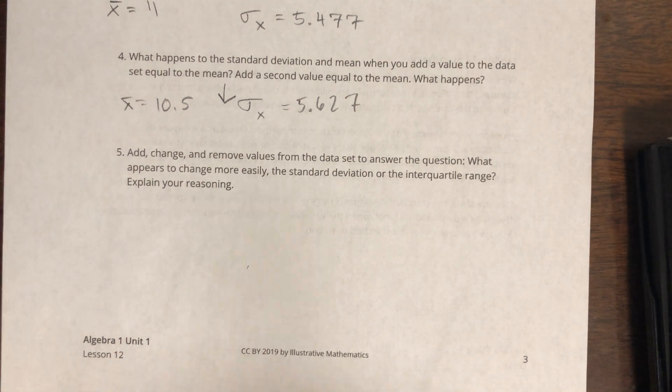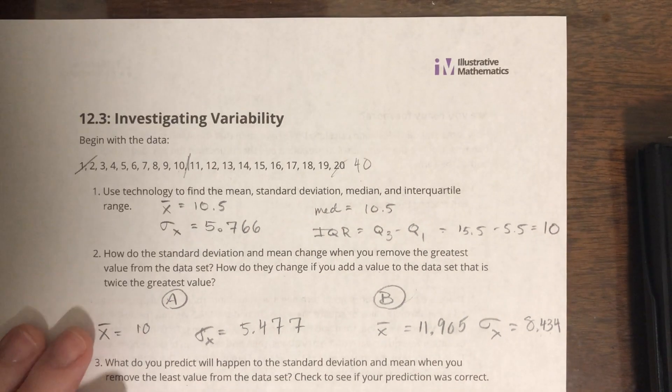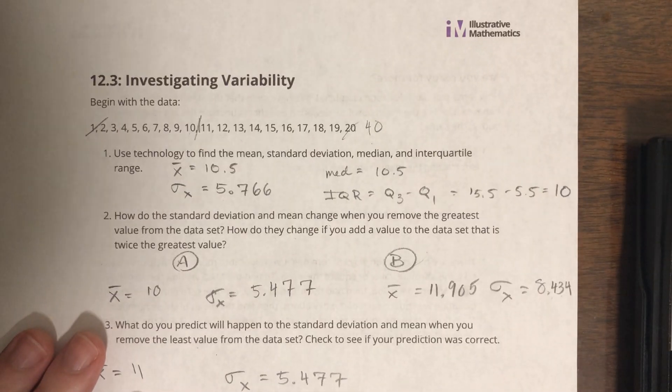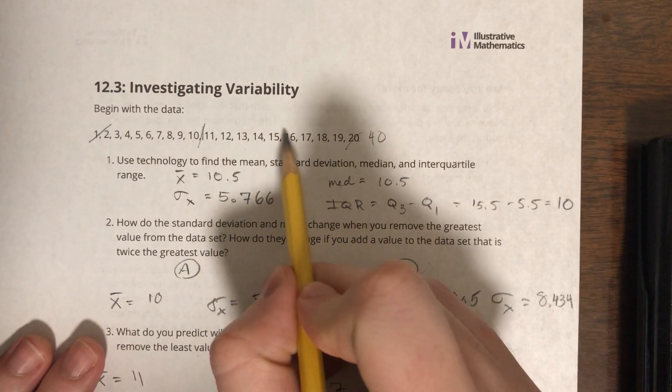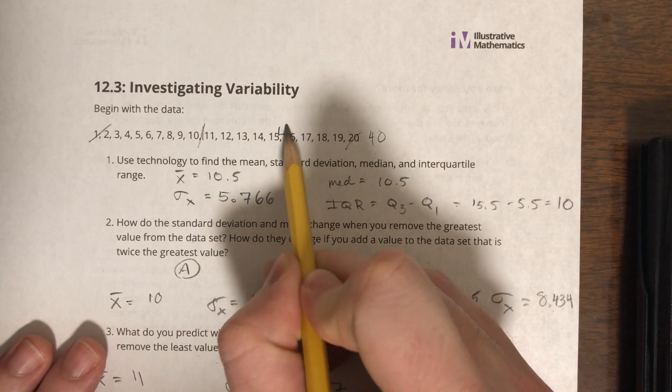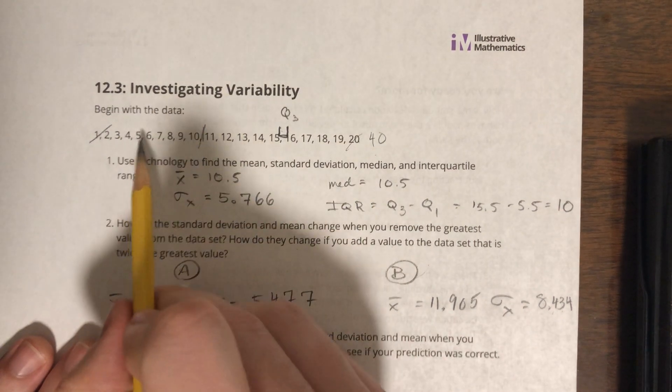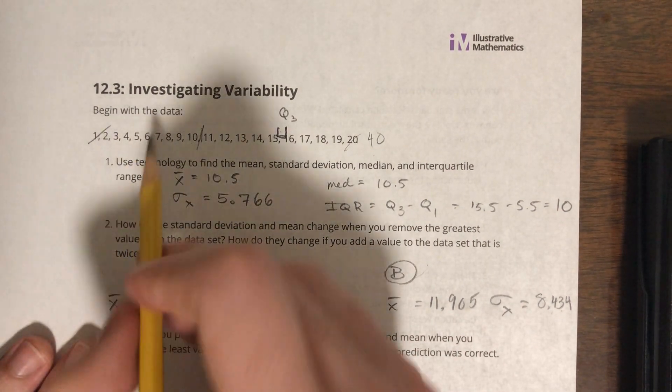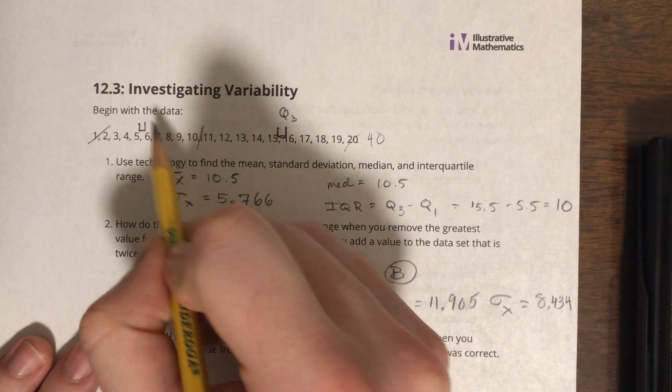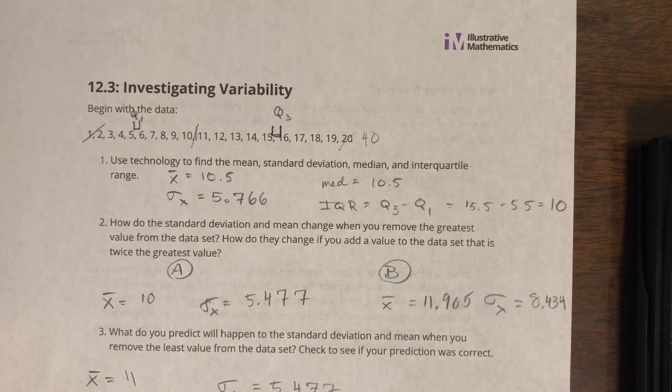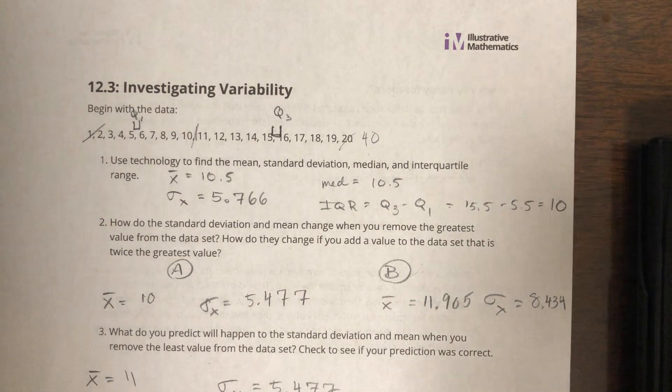Okay, so if we look at the IQR, right, that's determined by two numbers. That's determined by Q3 and Q1. So in this case, Q3 is 15.5, so right between here, that's Q3, and Q1 is going to be 5.5, so right between 5 and 6.